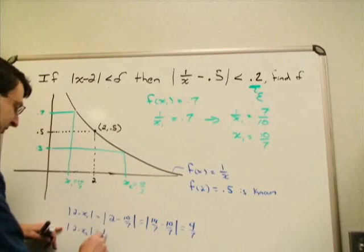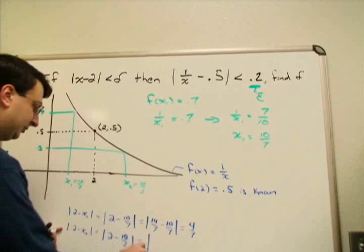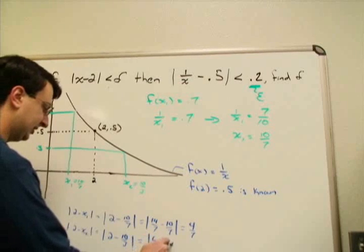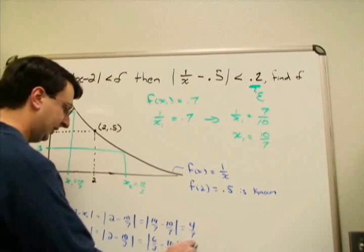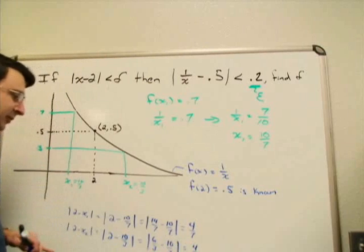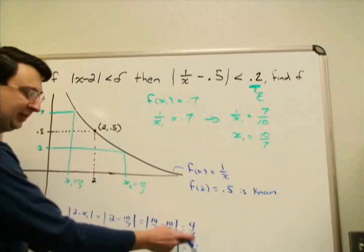Here I have absolute value of 2 minus 10/3, which is equal to |6/3 - 10/3|. That gives me a positive 4/3. It would be negative 4/3, but the absolute value makes it positive.